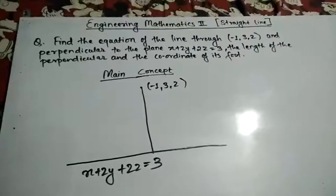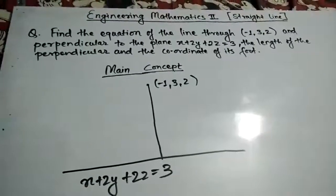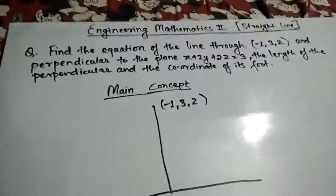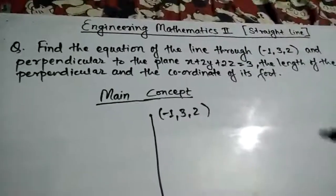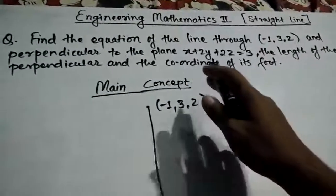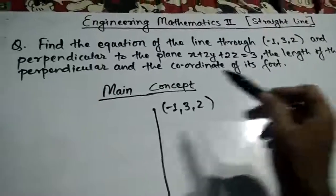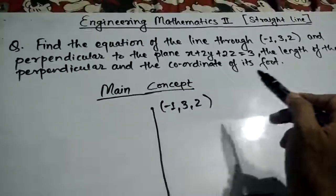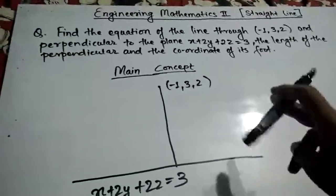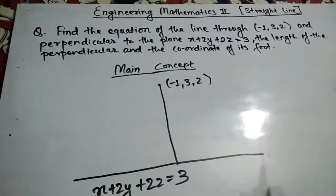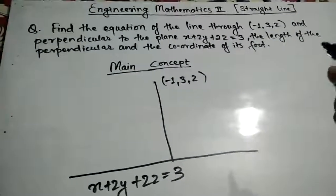Hello guys, welcome to ASP Hero. Today we are going to solve a problem on a straight line. We have given a problem: find the equation of the line through point (-1, 3, 2) and perpendicular to the plane x + 2y + 2z = 3, and find the length of the perpendicular and the coordinate of its foot. Before solving, we'll see the main concept.